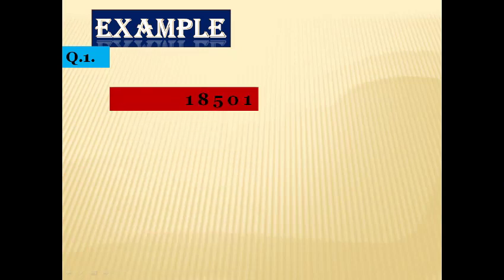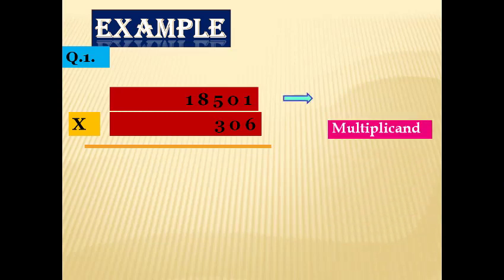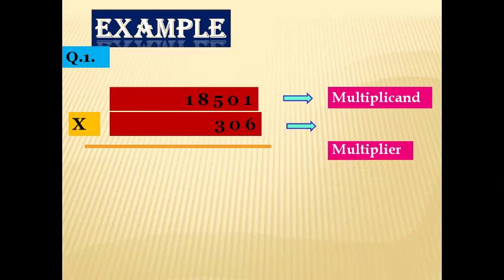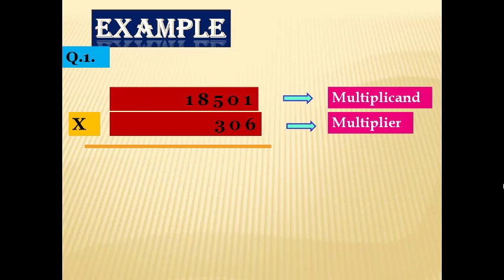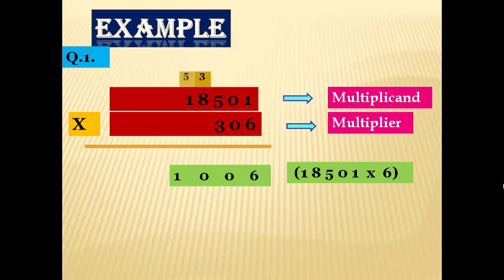Example number one: Multiply 18,501 by 306. In this example, 18,501 is the multiplicand and 306 is the multiplier. First we multiply 18,501 by 6 (ones place): 6 × 1 = 6, 6 × 0 = 0, 6 × 5 = 30 — 0 placed, 3 carried. 6 × 8 = 48 + 3 carry = 51 — 1 placed, 5 carried. 6 × 1 = 6 + 5 carry = 11.